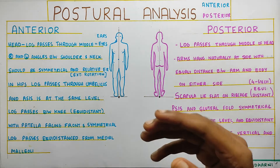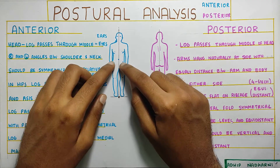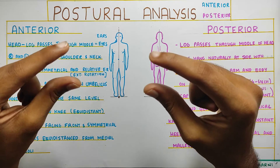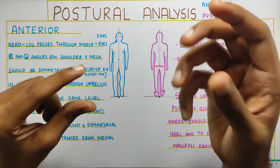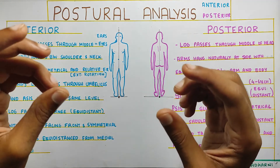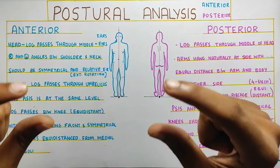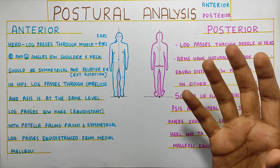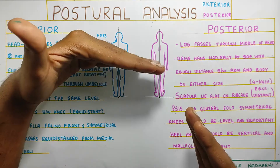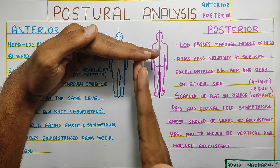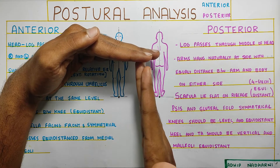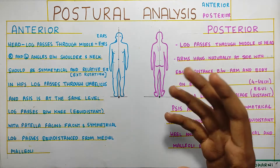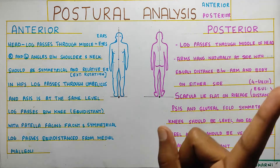At the pelvis, if the ASIS is not at the same level, it means there is an asymmetry somewhere below. Either the femur is short, causing the pelvis to drop on one side, or the hip abductors on one side are not acting properly. We've seen signs like Trendelenburg, where the body is not strong enough to keep the femur in abduction, causing the weak abductors to let the pelvis drop. I've discussed this in detail in the hip biomechanics in single-leg and double-leg stance video — I'll link it above.